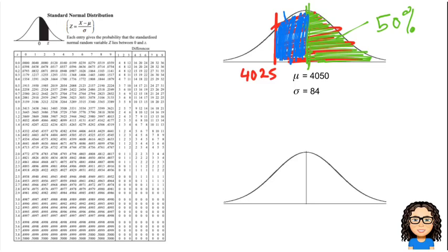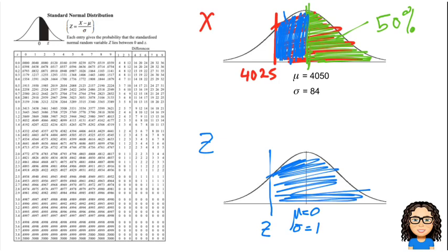So we're going to convert from our x distribution to our z distribution. Remember the z distribution has a mean of zero and a standard deviation of one. So we want to find the point down here, the z value, and it will be a negative because it's below zero. We want to find that z value so that the area above it is the same as the one in the diagram above.